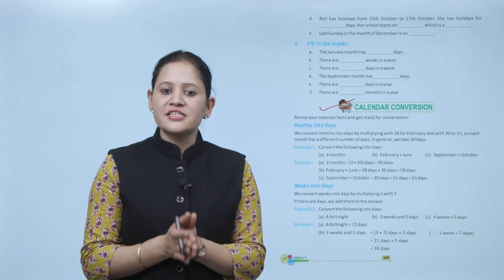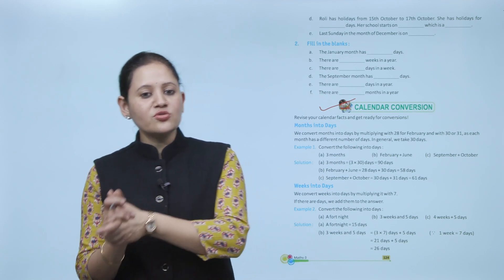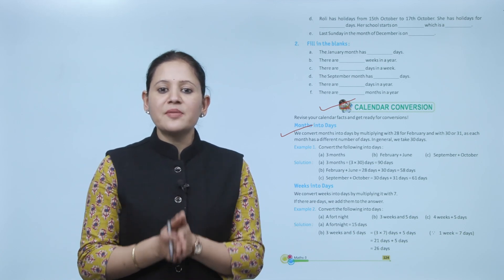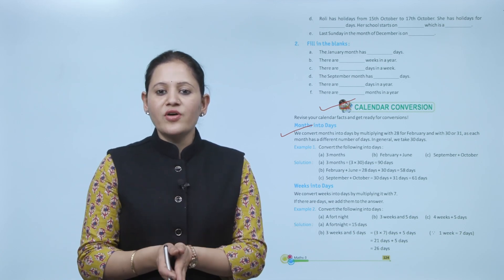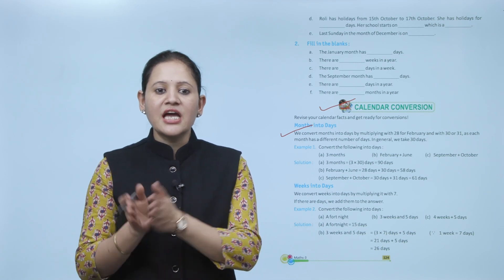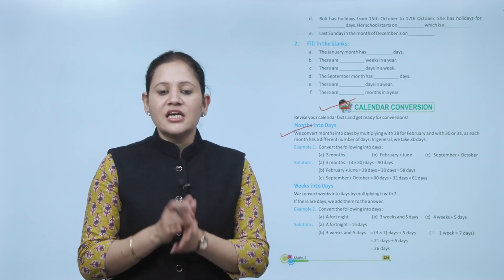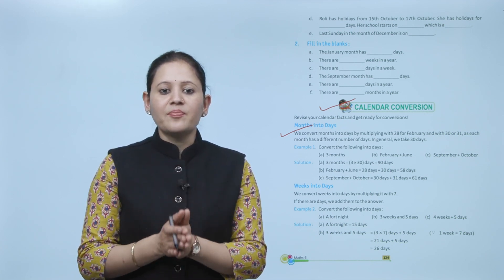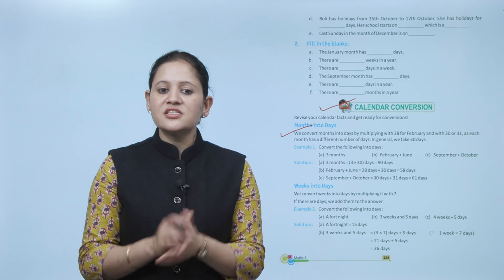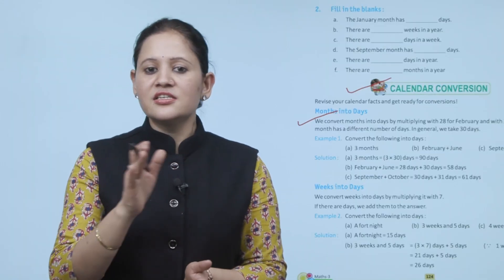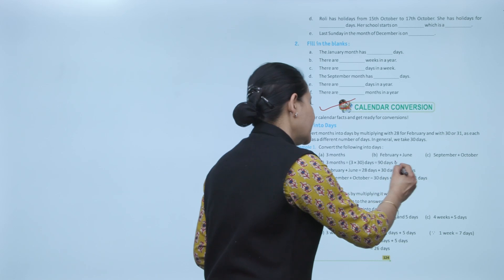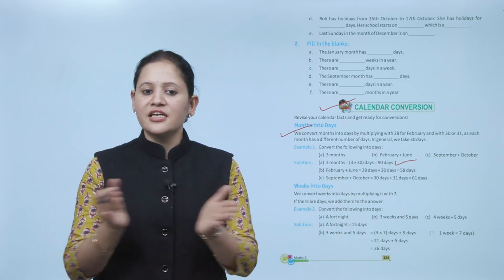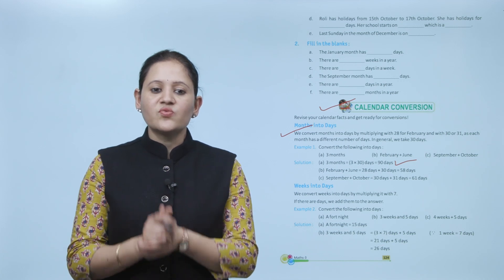Next is Calendar Conversion. Revise your calendar facts and get ready for conversion. To convert months into days, we multiply by 28 for February, or by 30 or 31 as each month has a different number of days. Generally we take 30 days. For example, convert 3 months into days: 3 × 30 = 90 days.